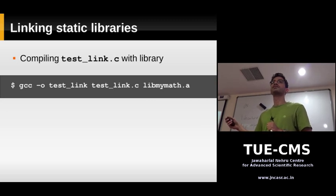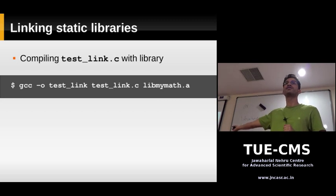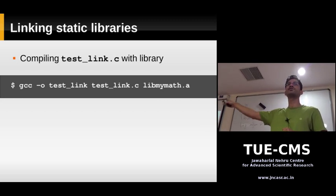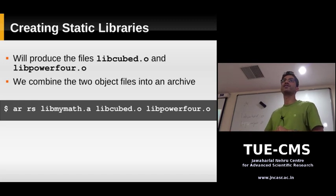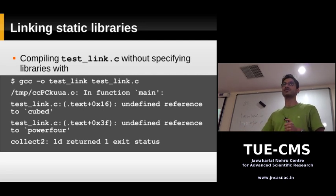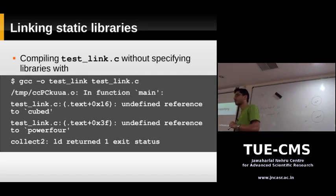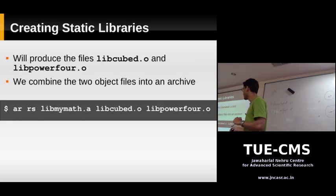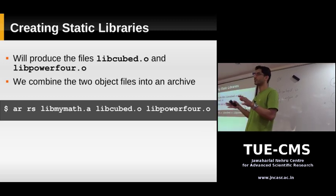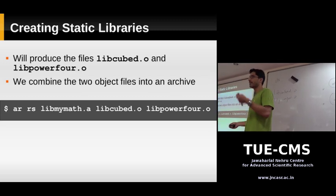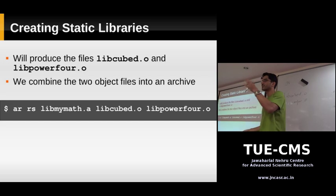If you want to add more functions like square root, you could create one more object file with the square root function and then add it to the archive. The R option adds files to an existing archive, and the S option tells it to produce an index, which makes linking faster.